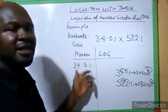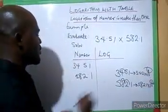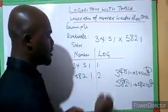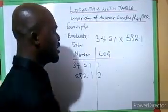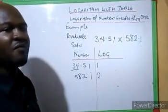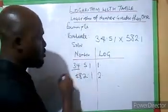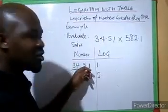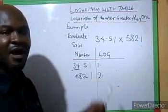To get the log number you need the characteristic and the mantissa. We have determined the characteristics. For 34.51, the characteristic is one — write one then a decimal point. For 582.1, the characteristic is two — write two then a decimal point. Then go to your four-figure logarithm table. You'll see a column of X. For 34.51, the first two digits are 34; look for row 34 in column X, then go across to column 5.